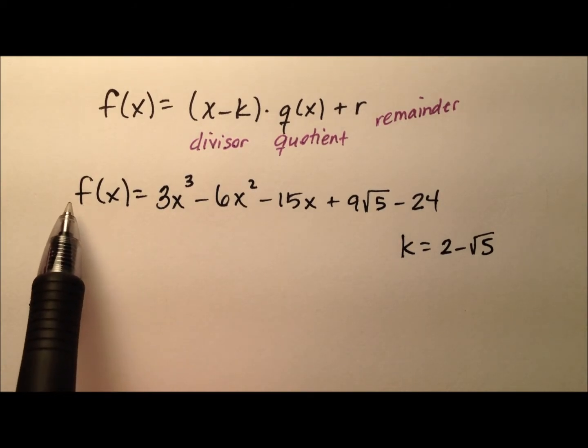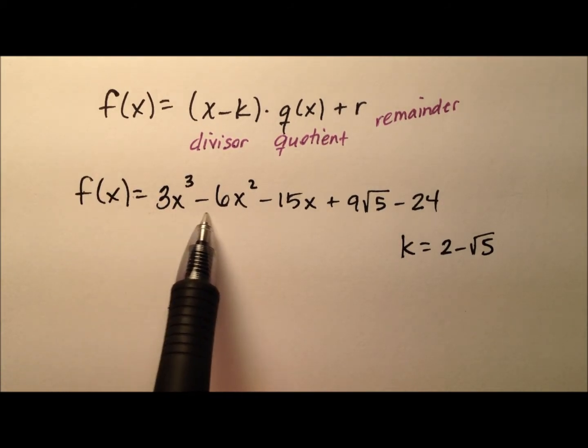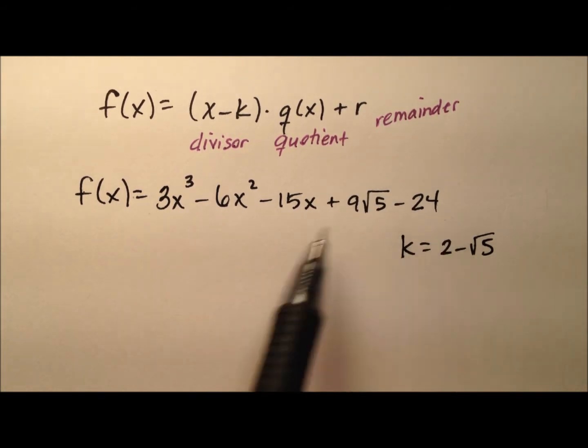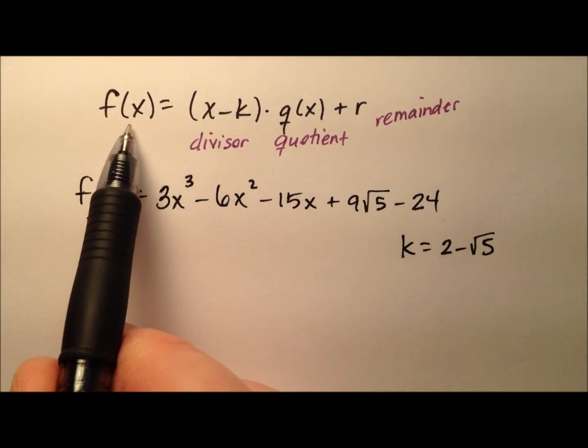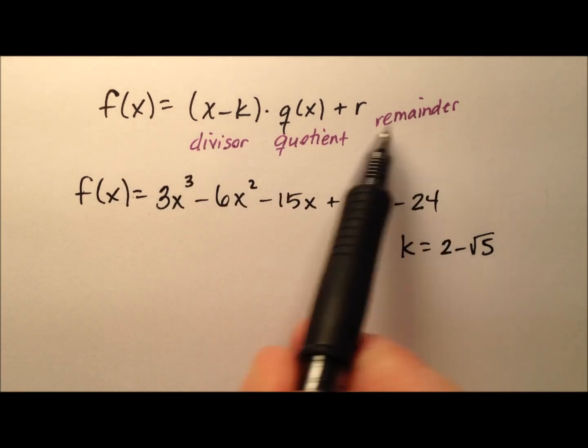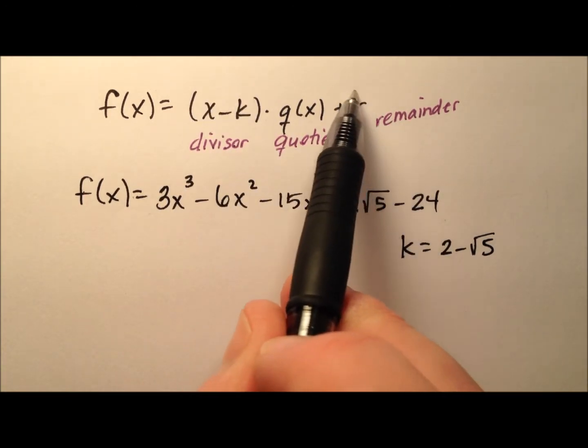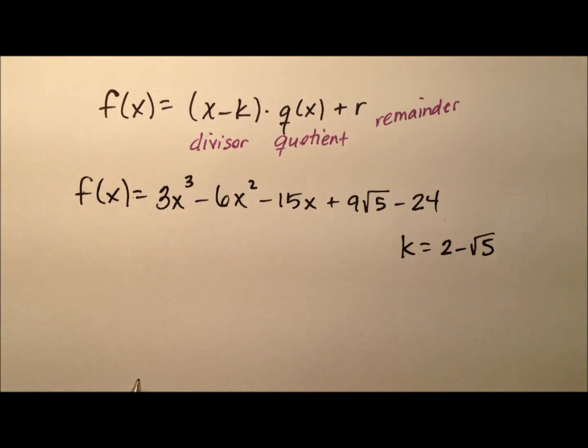In this example, I would like to take my function f of x, which is a polynomial function. It looks like we have some irrational values as well as rational values, and I would like to rewrite it in this form where I have the divisor being multiplied by the quotient and then our remainder plus r kind of trails along at the end.